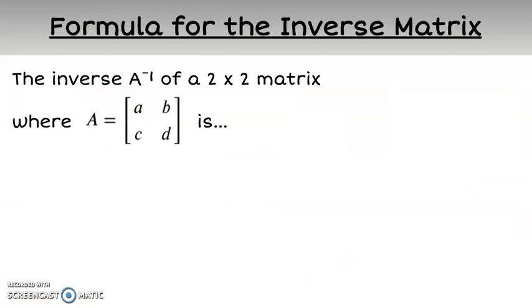Now that we have investigated inverses of matrices, we can formalize the process we used. First note the notation that we used for the inverse of a matrix. The negative 1 is not an exponent. It is read A inverse and refers to the multiplicative inverse of A. This is similar to the notation we used for the inverse of a function.